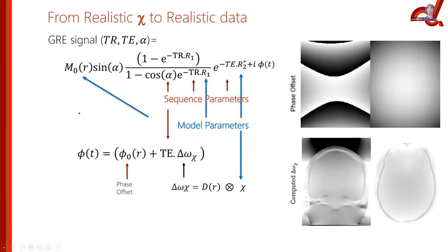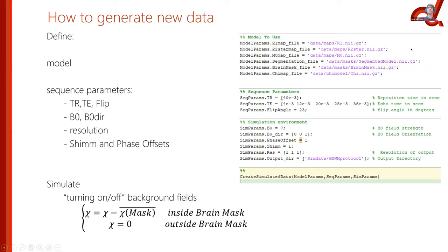In practice, code-wise it's quite simple. We release the model with R1, R2*, M0, the segmentation model, and the susceptibility model. You specify what kind of sequence you're simulating and the environment: 7T or other field strength, head orientation relative to the magnetic field, phase offsets from B1 inhomogeneity, extra shimming, and very importantly what resolution you want your simulations performed at. This allows you to simulate more complex features like full slice dephasing effects, and then generate data.